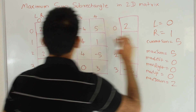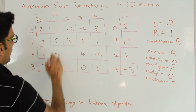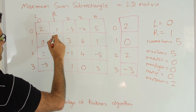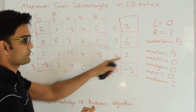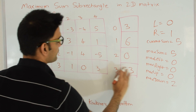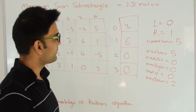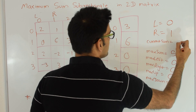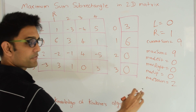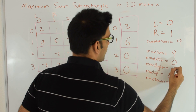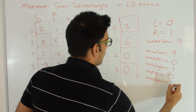We increment right to 1. We add column 1 into the temp array: 2+1=3, 0+6=6, 2+(-2)=0, -3+3=0. Applying Kadane's algorithm gives maximum sum sub-array of sum 9, starting at 0 and ending at 1. Current sum 9 is greater than max sum, so max sum becomes 9. Max left=0, max right=1, max up=0, max down=1.